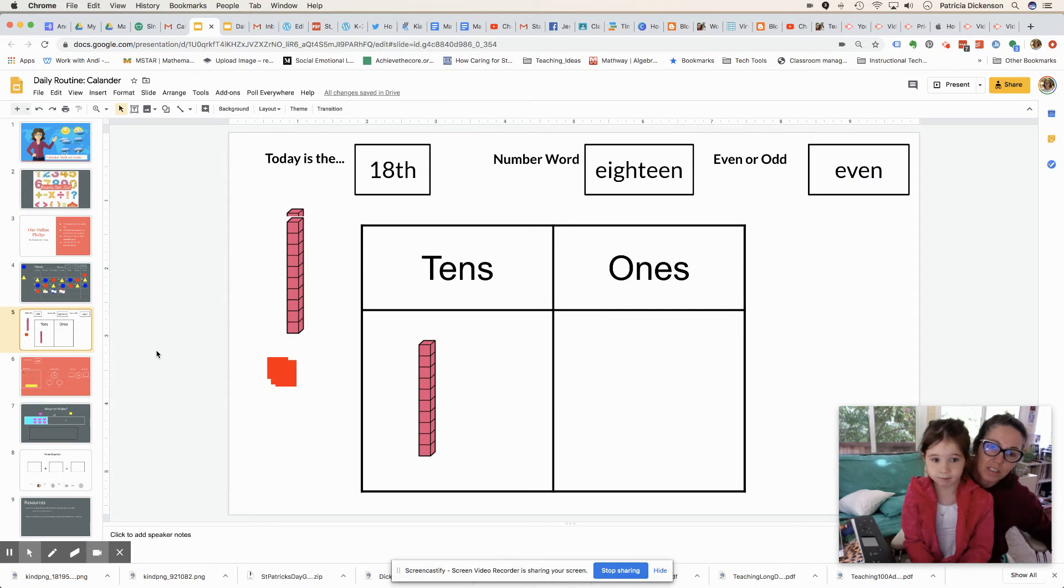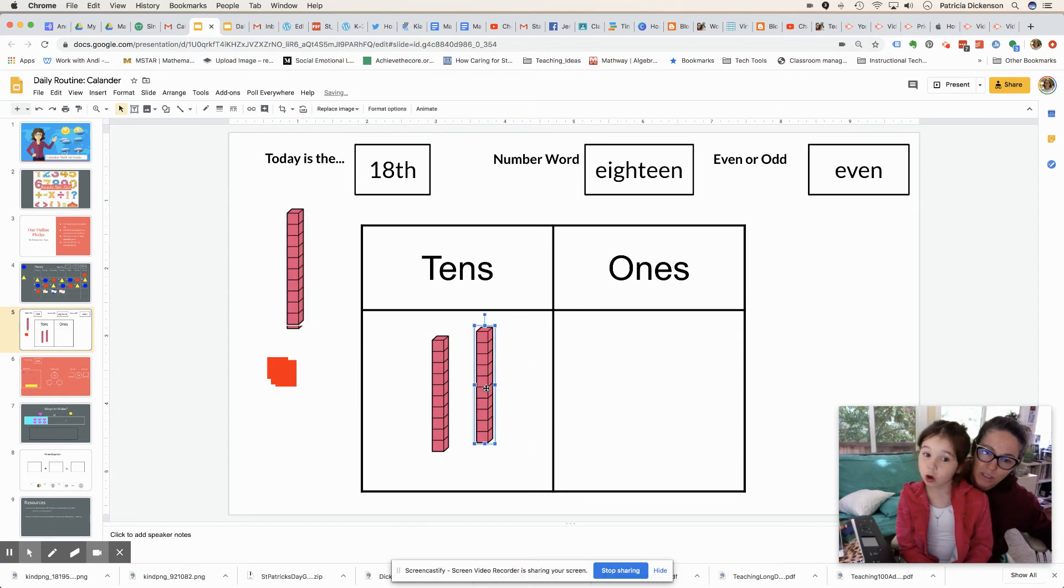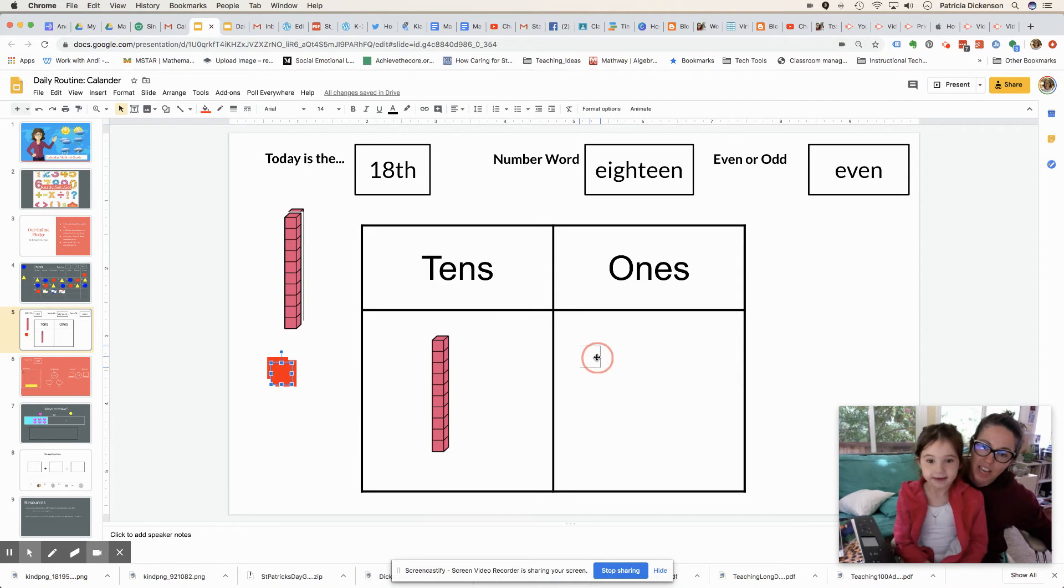Okay, we're going to build the number 18. I know how to build it. How many tens do I put? Two? No, one. One ten? Yes. And how many ones? Eight. Let's count. One, two, three, four, five, six, seven, eight.